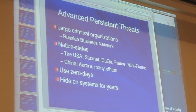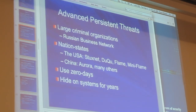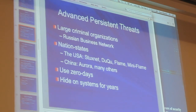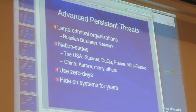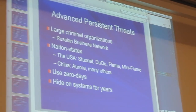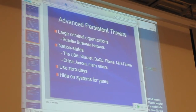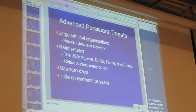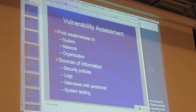Advanced persistent threats are highly motivated, highly funded attackers that seriously want to take you over — you can't stop them with simple intrusion detection systems and antivirus because they're too motivated and too smart. The Russian Business Network was a big criminal gang doing this. The US did it to Iran several times — Stuxnet, Duqu, Flame, and Wiper were all targeted attacks against Iran. China did Aurora and many others against US companies and government. These attackers come with zero-day attacks so there's no patch. They hide stuff and stay in there for years. Very difficult for individual companies to protect themselves.